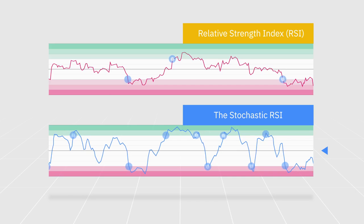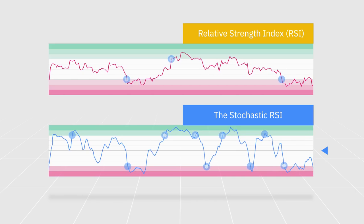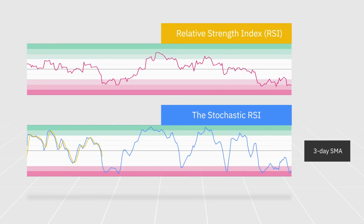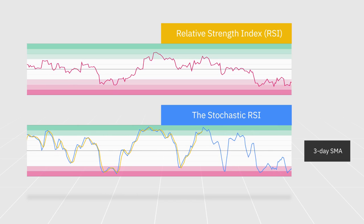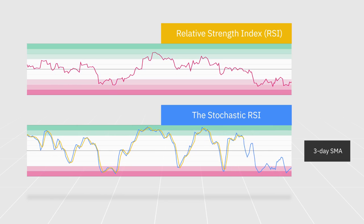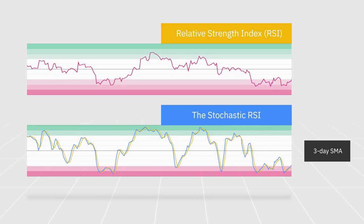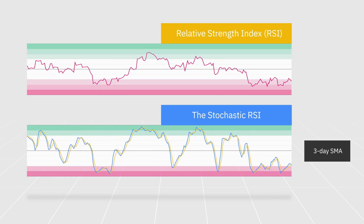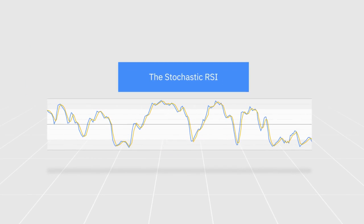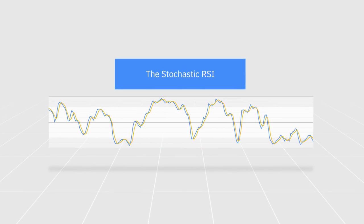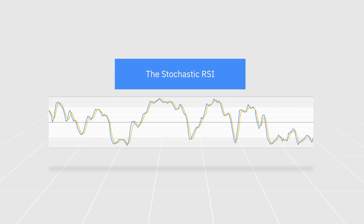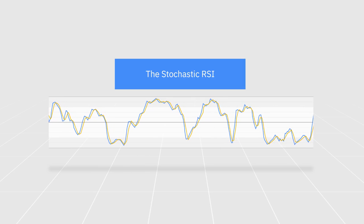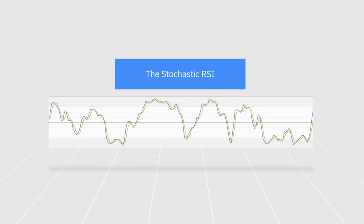Due to its increased speed and sensitivity, some charts include a 3-day simple moving average along with the stochastic RSI line. The SMA acts as a signal line and is meant to reduce the risks of trading on false signals. As such, the stochastic RSI should be used along with other tools to help confirm the signals it creates, especially in volatile markets.